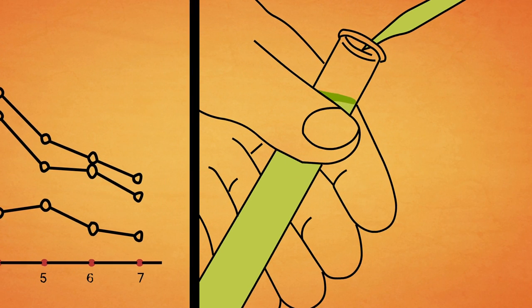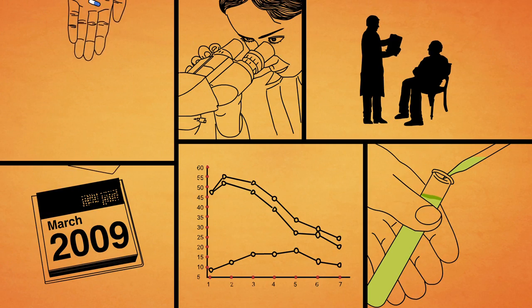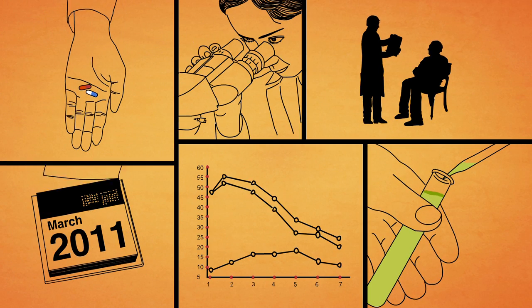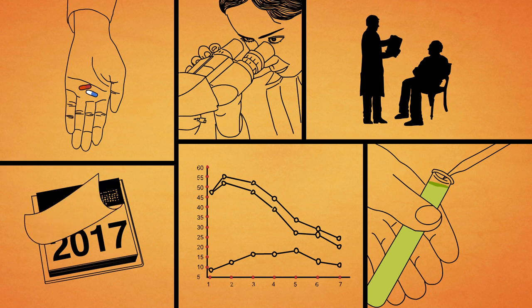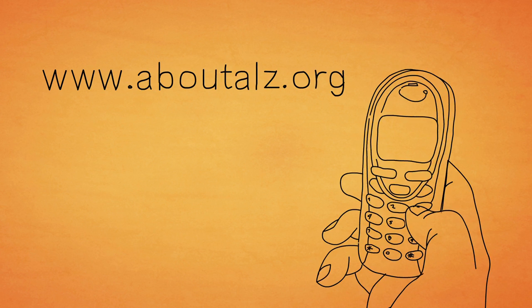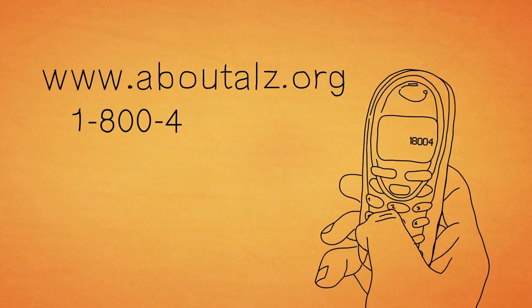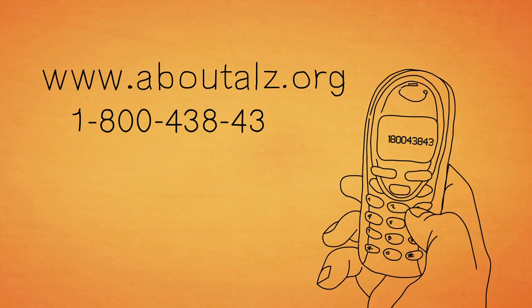Because Alzheimer's develops so slowly, it takes a long time to see if a new drug is doing any good. You may be able to help. For information on how to get involved in drug trials, go to www.aboutalz.org or call 1-800-438-4380.